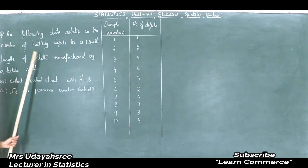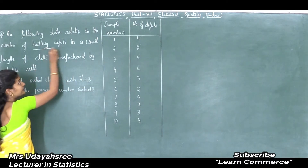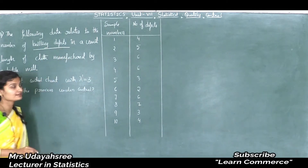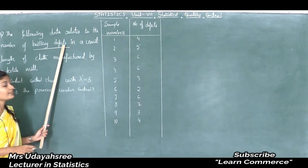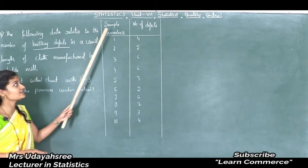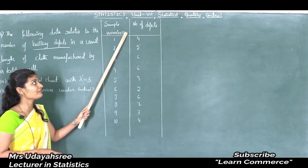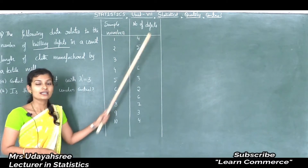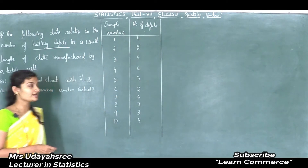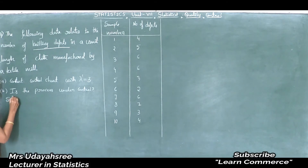This is the number of knitting defects. Defects in the sense — that is a C chart. The given observations are sample number and number of defects, so number of defects means C chart. Therefore, this problem is based on C chart.